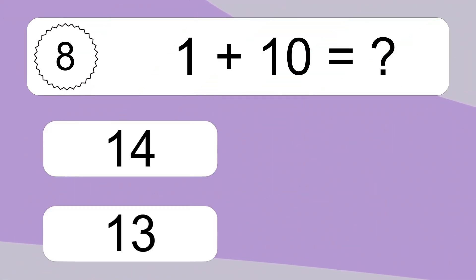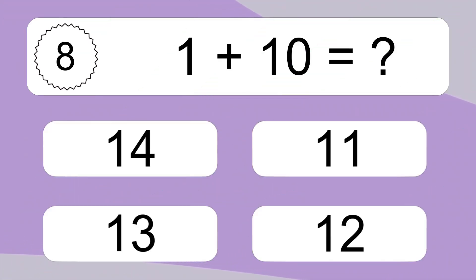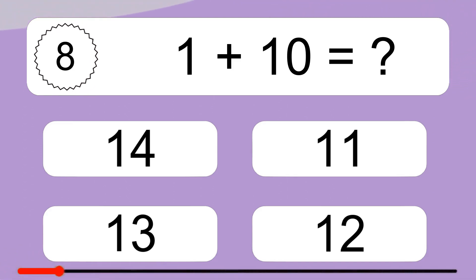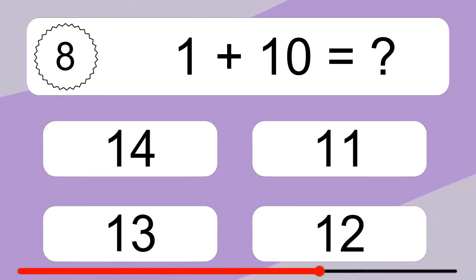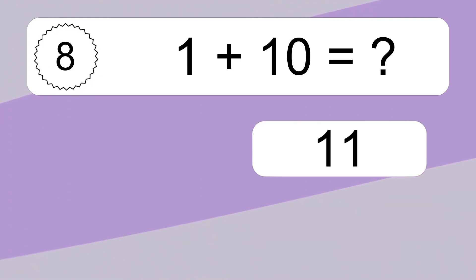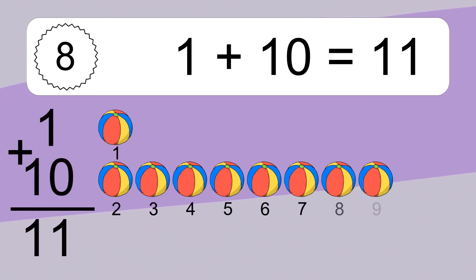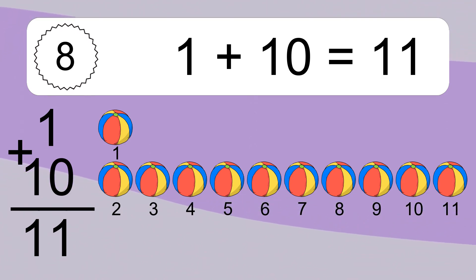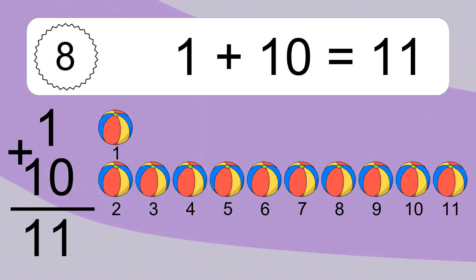1 plus 10 equals what? 1 plus 10 equals 11. Let's count it. 1, 2, 3, 4, 5, 6, 7, 8, 9, 10, 11.